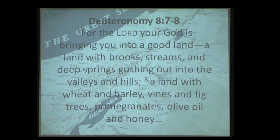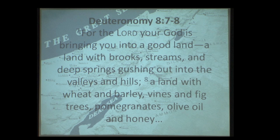Deuteronomy 8:7-8 describes the foodstuffs of Hebron. Think of Hebron as the breadbasket of Israel. What did people in the world of the Bible eat? 'For the Lord your God is bringing you into a good land, a land with brooks, streams, deep springs gushing out into the valleys and hills' — and here are the seven species: wheat and barley, vines, fig trees, pomegranates, olive oil, and honey.